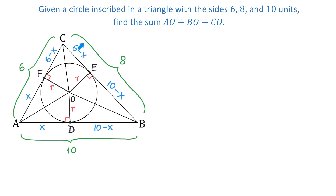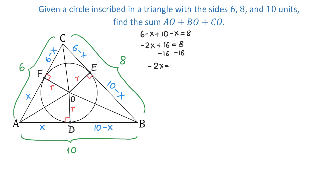Side BC is 8 units, and we can find X by solving the equation: 6 minus X plus 10 minus X equals 8. Combining like terms on the left side, negative X plus negative X makes negative 2X, and 6 plus 10 makes 16. So 16 minus 2X equals 8. Subtracting 16 from both sides gives negative 2X equals negative 8. Dividing both sides by negative 2, we get X equals 4.